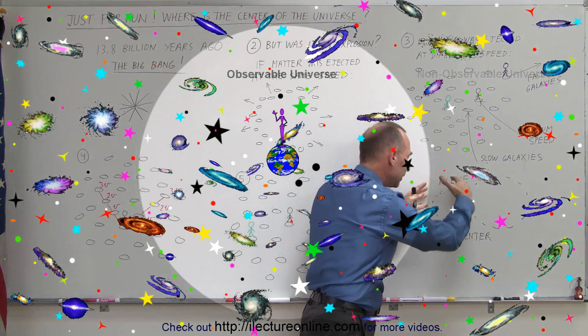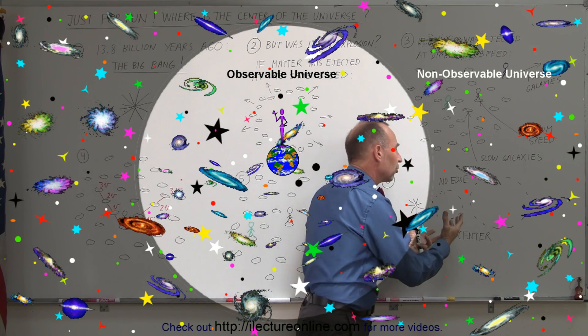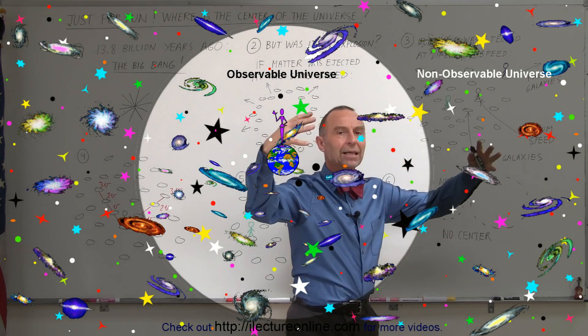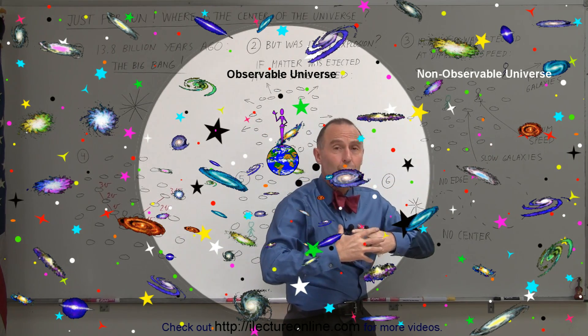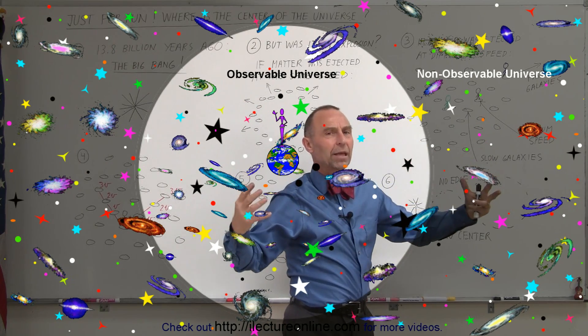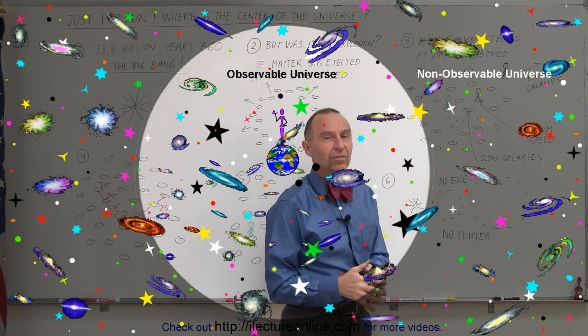There's no visible edge to the universe, no discernible edge, there's no discernible center. It's simply the universe expanding, because space is expanding, and all the galaxies are going along with space as space is expanding. No place where we can see a center, no place where we can see an edge.